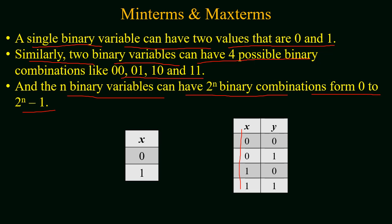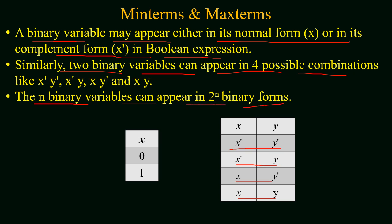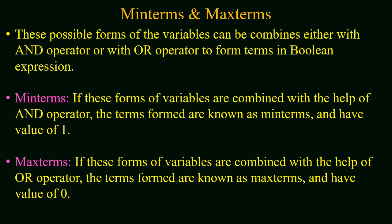These combinations are associated with the values of a binary variable. In any boolean expression, a binary variable can occur in a normal form (unprime form) or the prime form (complemented form). If a boolean function consists of two variables, then we have four possible forms of appearance: x'y', x'y, xy', and xy. If we have a function with n binary variables, the possible forms of appearance are 2^n. Multiple variables within a function can be combined using the AND operator or the OR operator to form terms in a boolean expression.